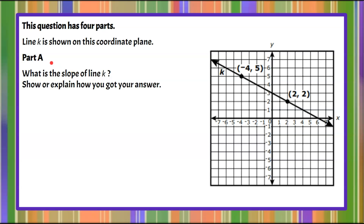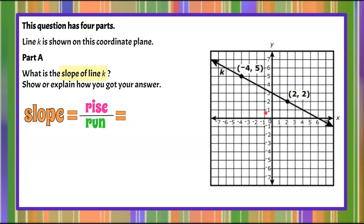Welcome back. Here's the solution to part a. We want to find the slope of line k, and I'm going to show you two ways to do this. Slope can be equal to rise over run. Slope is a ratio — it tells us the steepness of a line and also tells us the direction of a line. When we read a graph, we read from left to right. If a slope is going down left to right, it would have a negative slope. If it's increasing from left to right, it would have a positive slope.